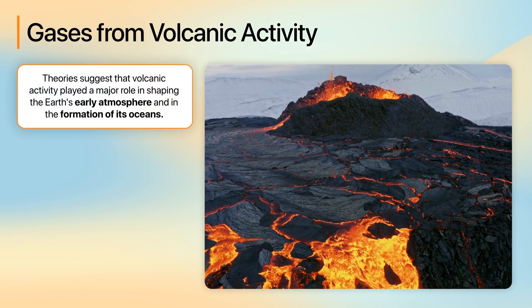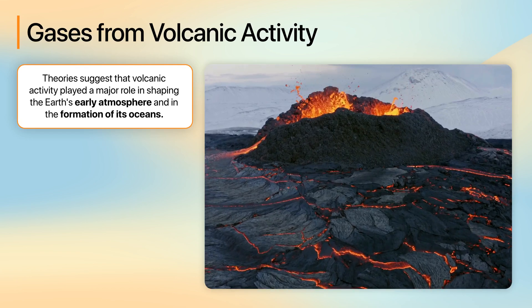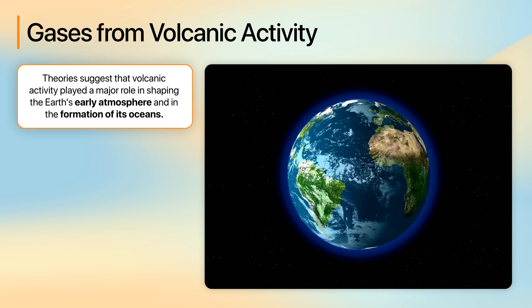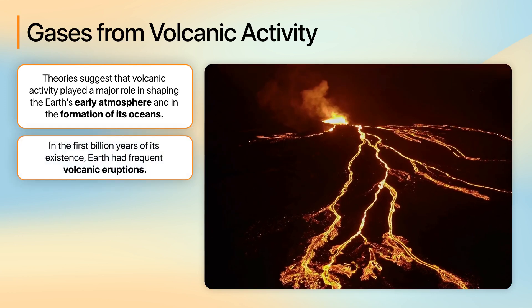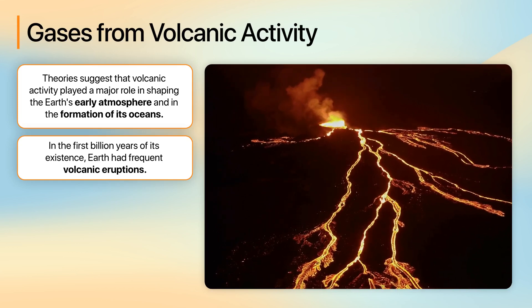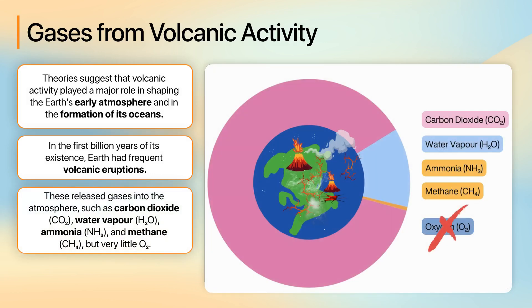Theories suggest that volcanic activity played a major role in shaping the Earth's early atmosphere and in the formation of its oceans. To understand this, we need to explore some key processes from Earth's early history. In the first billion years of its existence, Earth was a highly volatile and dynamic place, with frequent volcanic eruptions.